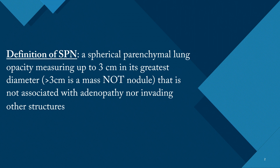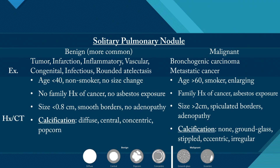First, what's a solitary pulmonary nodule? A solitary pulmonary nodule is a spherical parenchymal lung opacity measuring up to three centimeters in its largest diameter. If the lesion is more than three centimeters, this is not a nodule — this is a mass. So we are talking about lesions or nodules that are less than three centimeters in size, and it's not associated with adenopathy nor invading other structures.